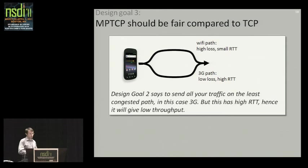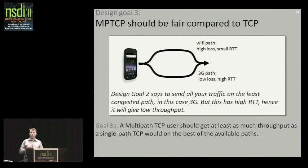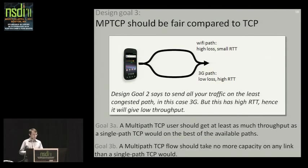What we did was formulate a very precise, formal statement of our fairness criteria in two parts. First: a multipath TCP user should get at least as much throughput as a single-path TCP would on the best of his available paths — so it should benefit the user. Second: a multipath TCP flow should take no more capacity on any link than a single-path TCP would on that link — so it should not harm the network. It took us quite a long time to realize this is what we were actually trying to solve.